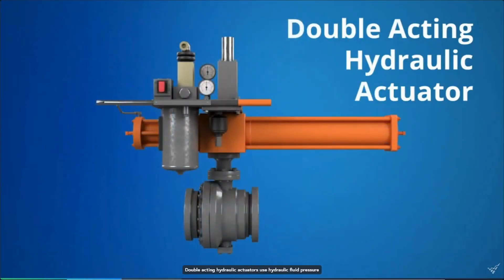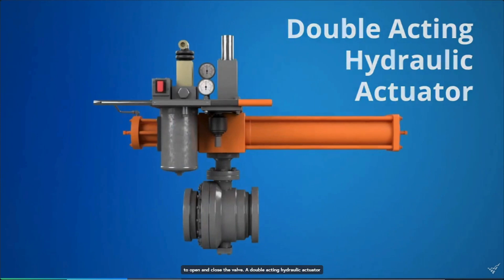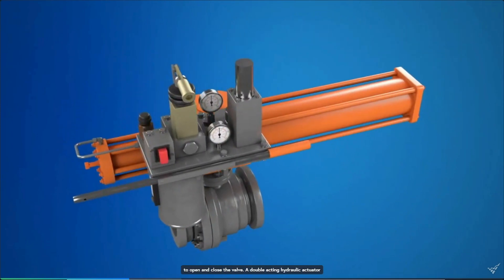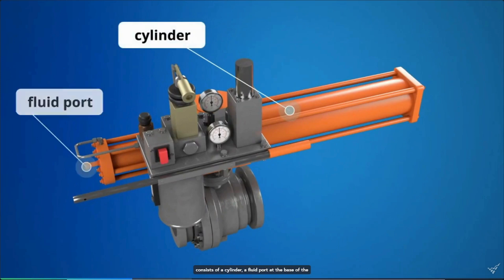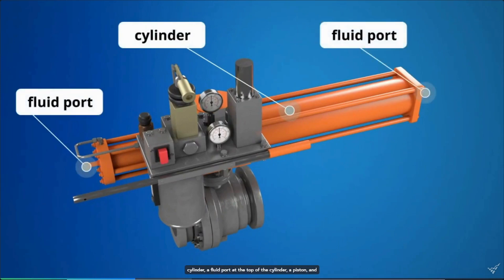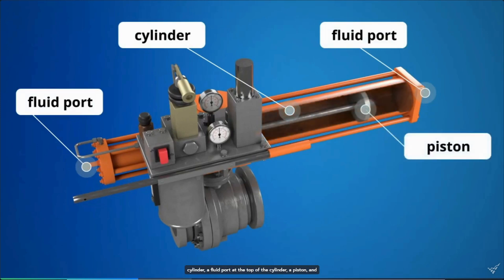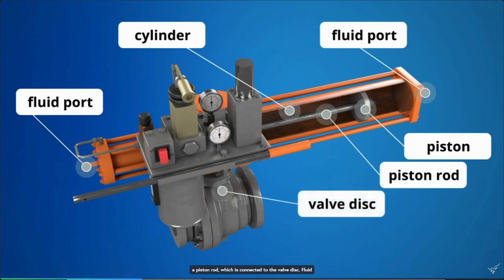Double-acting hydraulic actuators use hydraulic fluid pressure to both open and close the valve. A double-acting hydraulic actuator consists of a cylinder, a fluid port at the base of the cylinder, a fluid port at the top of the cylinder, a piston, and a piston rod, which is connected to the valve disc.